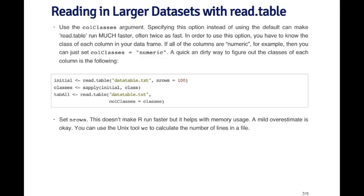If you have a few columns in your dataset, then you can usually just say what the classes are. But if they're all the same, then for example, if all the columns are numeric, you can just set colclasses equal to numeric. If you give it a single value, it will just assume that every column has that same value.